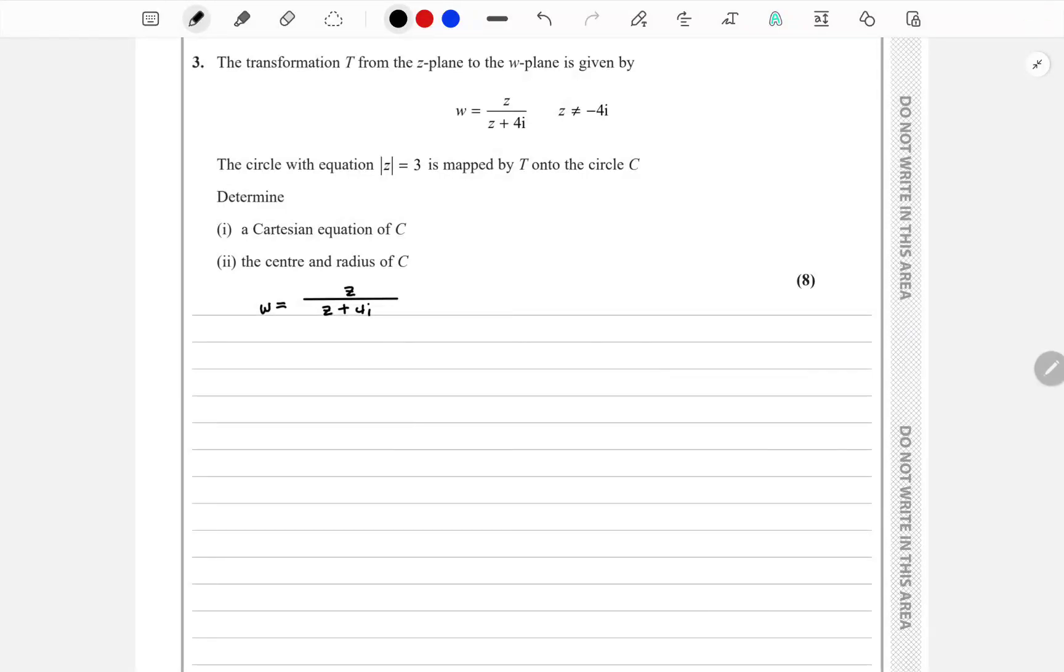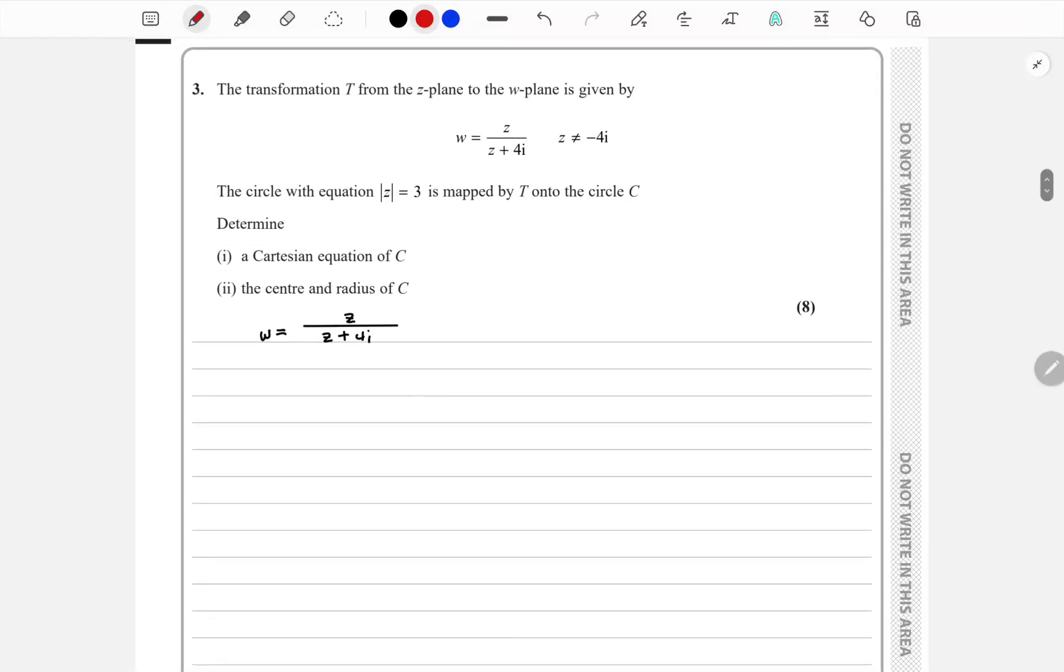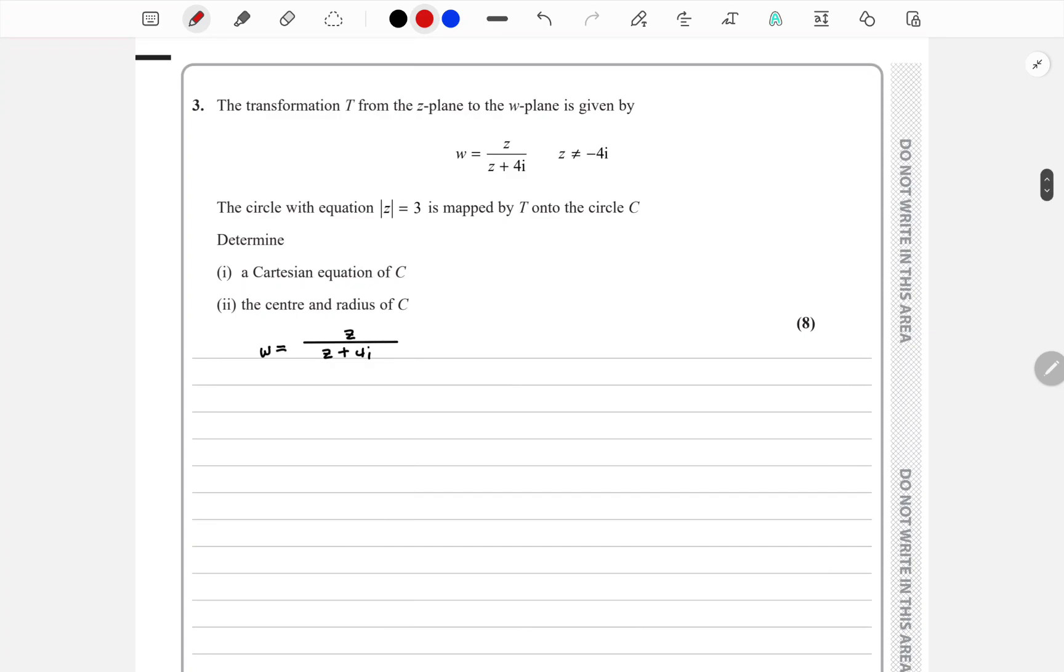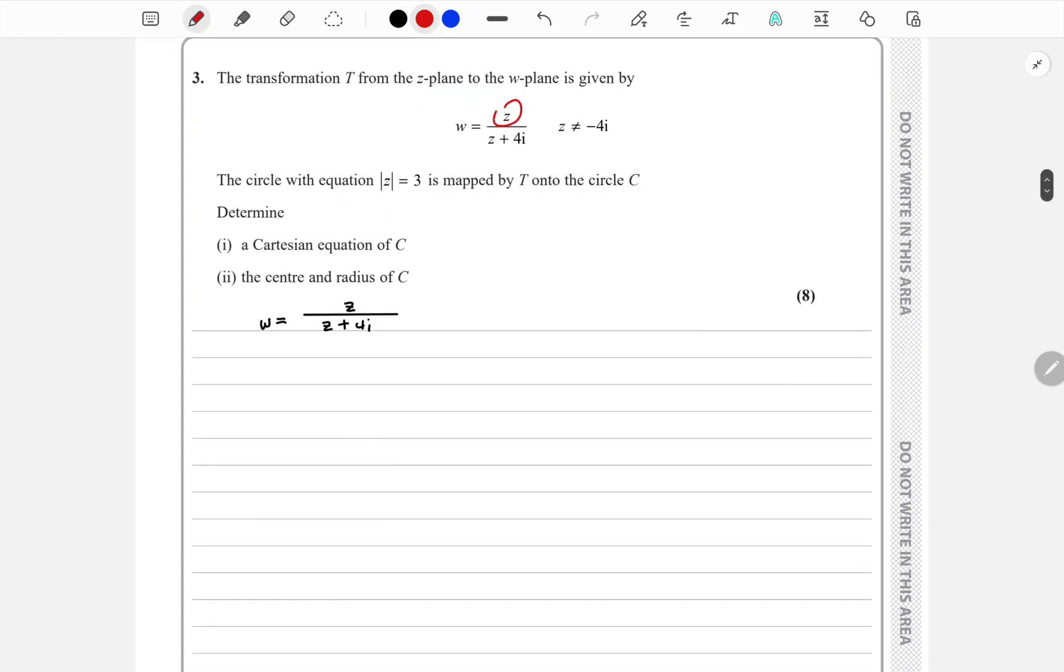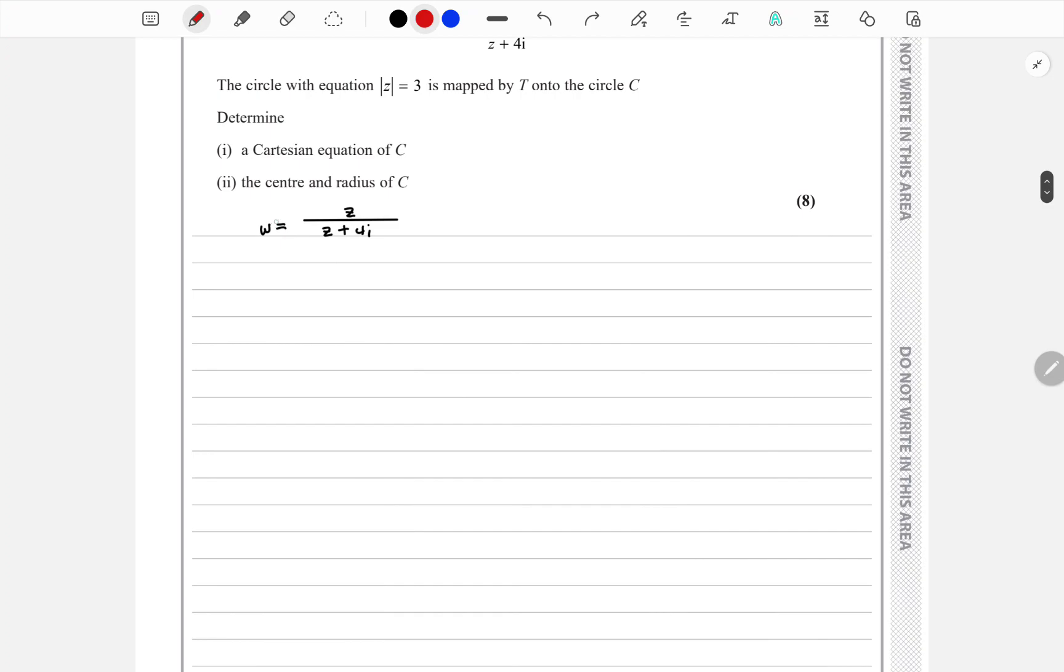For this question we need to do transformation in the complex plane. At first we need to apply this equation. To do that we need to make Z the subject. We do so by multiplying W with Z plus 4i in the denominator, multiplying this with this, which we get this.